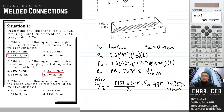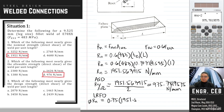Problem 3: Which of the following most nearly gives the design strength of the weld per unit length? For design strength, we use the LRFD code, which gives phi times R_N. The resistance factor phi for welds is 0.75. Multiplying by the nominal strength, we obtain 1463.67 N per mm, and the answer is letter D.